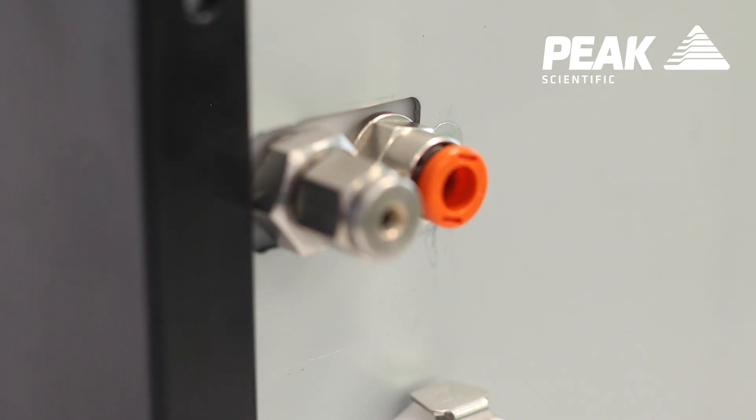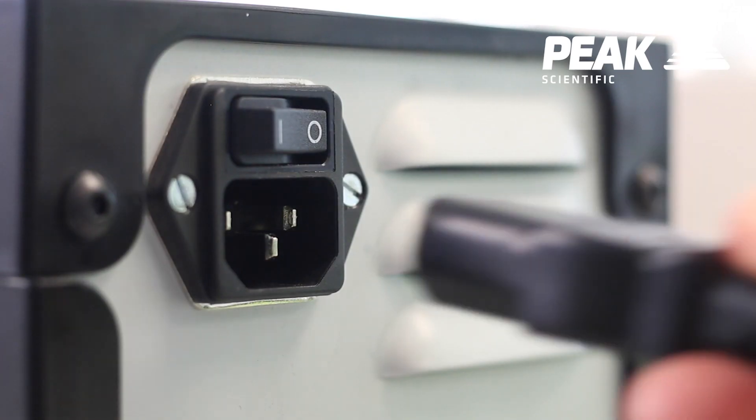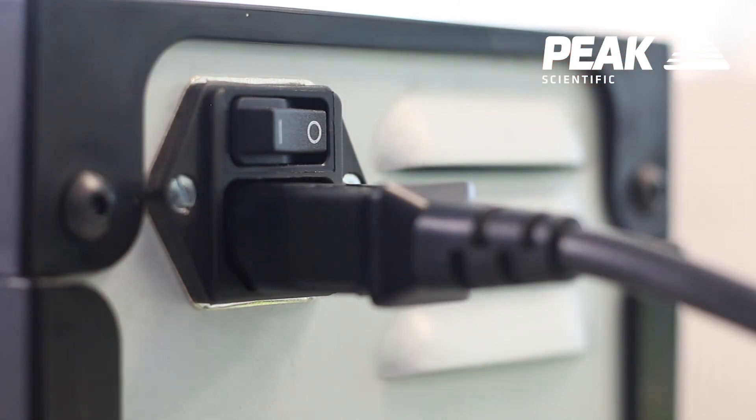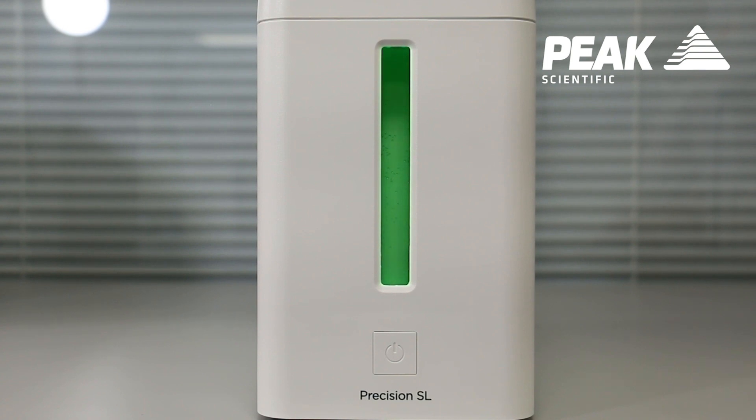Although Precision SL is a more compact generator, we haven't compromised on any of the safety features. When the system is started up, it will go through a self-diagnostic check to make sure that there are no internal leaks and that the system is ready to safely produce hydrogen. With Precision SL we have an incredibly small product that will produce enough gas to supply an entire lab for its detector gas needs.